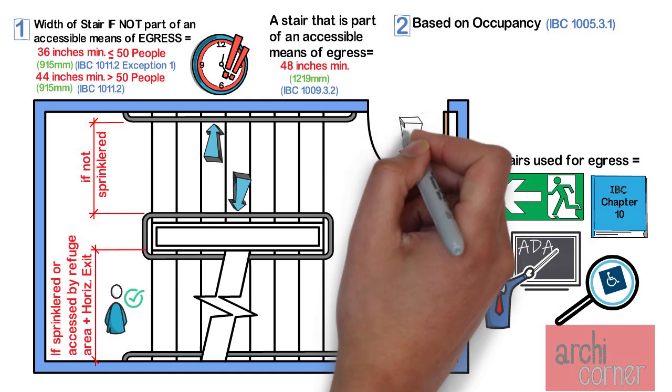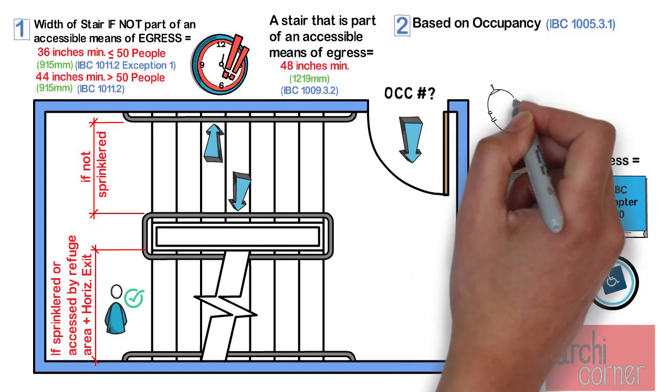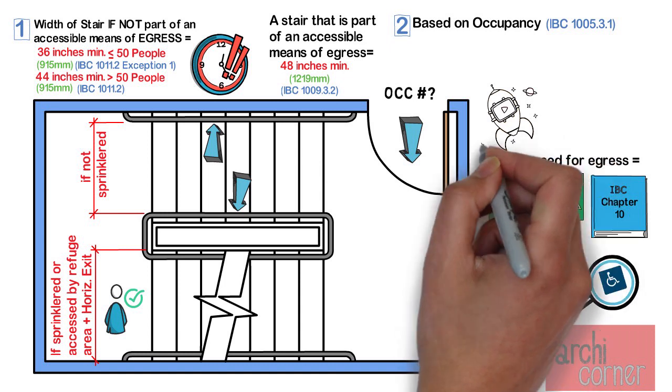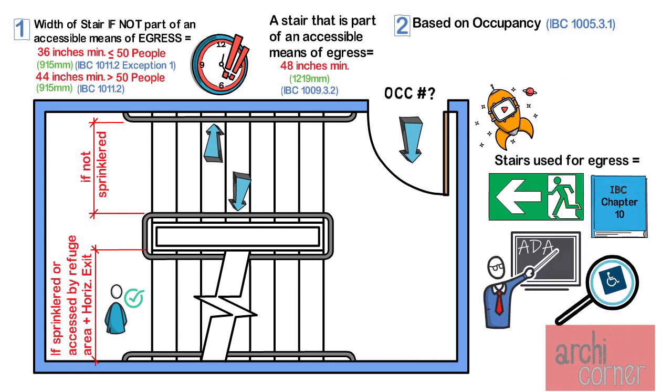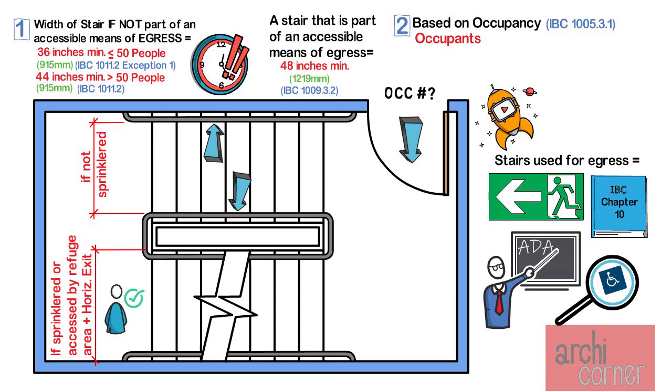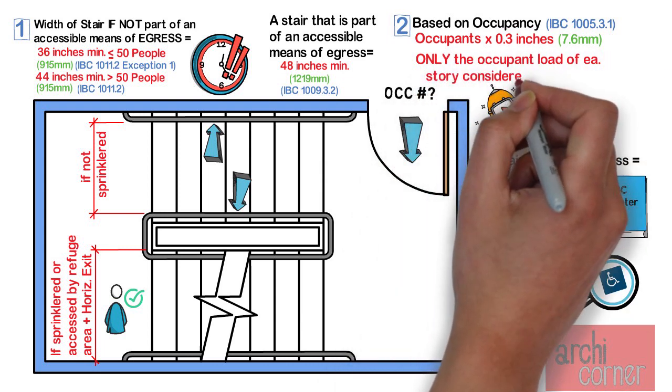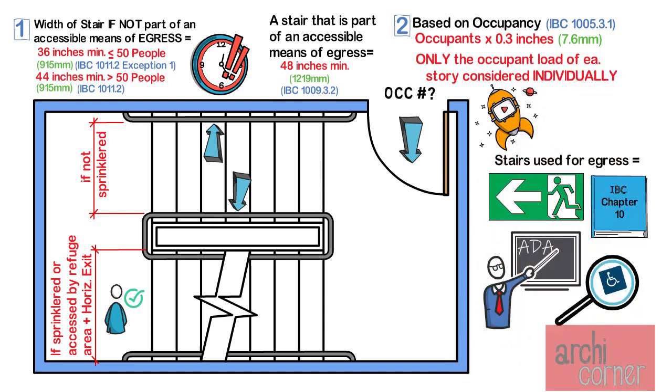This takes us to the second method, which is basing stair width on occupancy load. How do you find that out? First, you need to know how many occupants need access to that stair for egress. If you do not know how to figure out the occupant load of an area, you can watch the video that is popping up on your screen right now. There will also be a link to this at the end of the video. Once you know how many occupants need to access your stair, you simply multiply that occupancy load by 0.3 inches. If the stairs serve more than one story, have in mind that you only need to consider individual floors when used in calculating the required width. In other words, you do not need to calculate your floor plus the floor above it plus the floor above it and so on. No, only the individual floor is calculated in this regard.